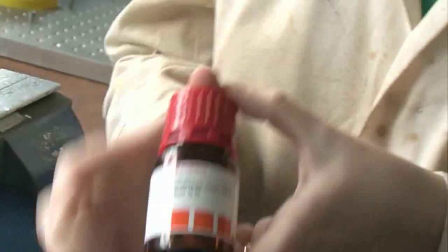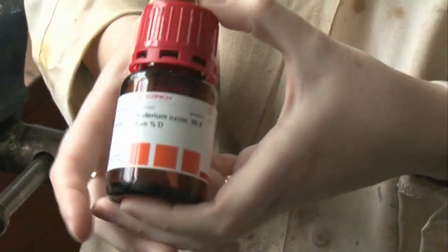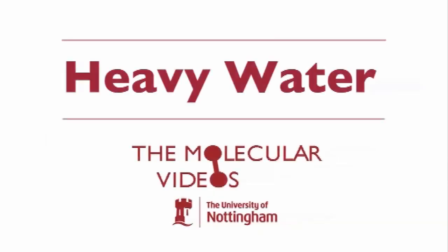What we're going to talk about is deuterium oxide. Deuterium oxide is often referred to as heavy water. Most elements exist in more than one form which are chemically identical but where the atoms weigh different amounts.